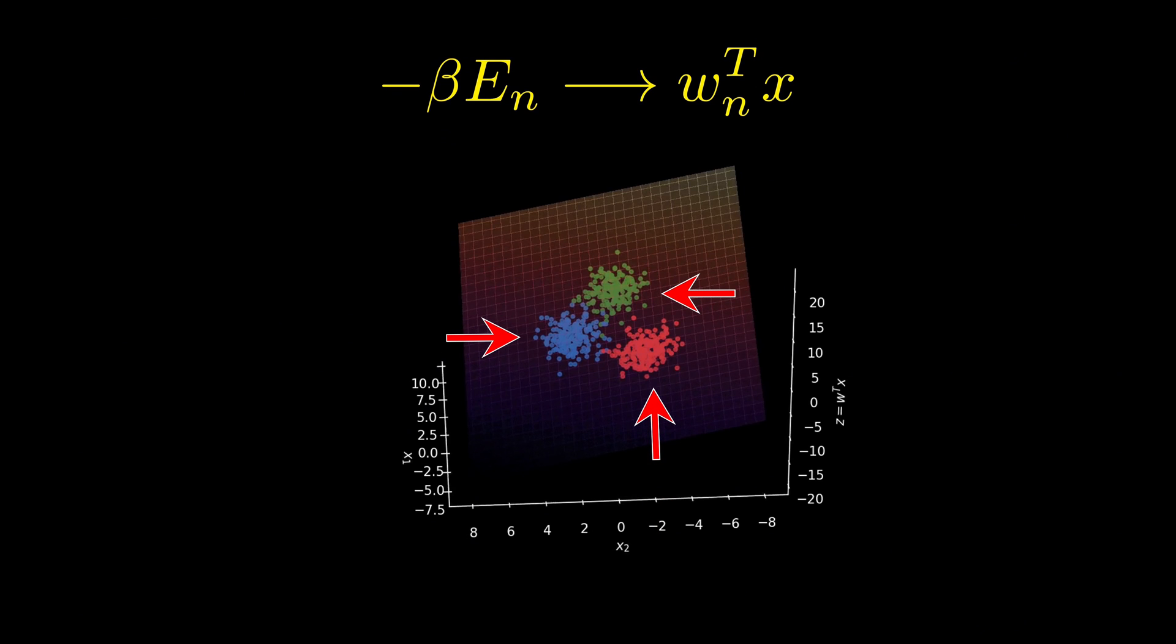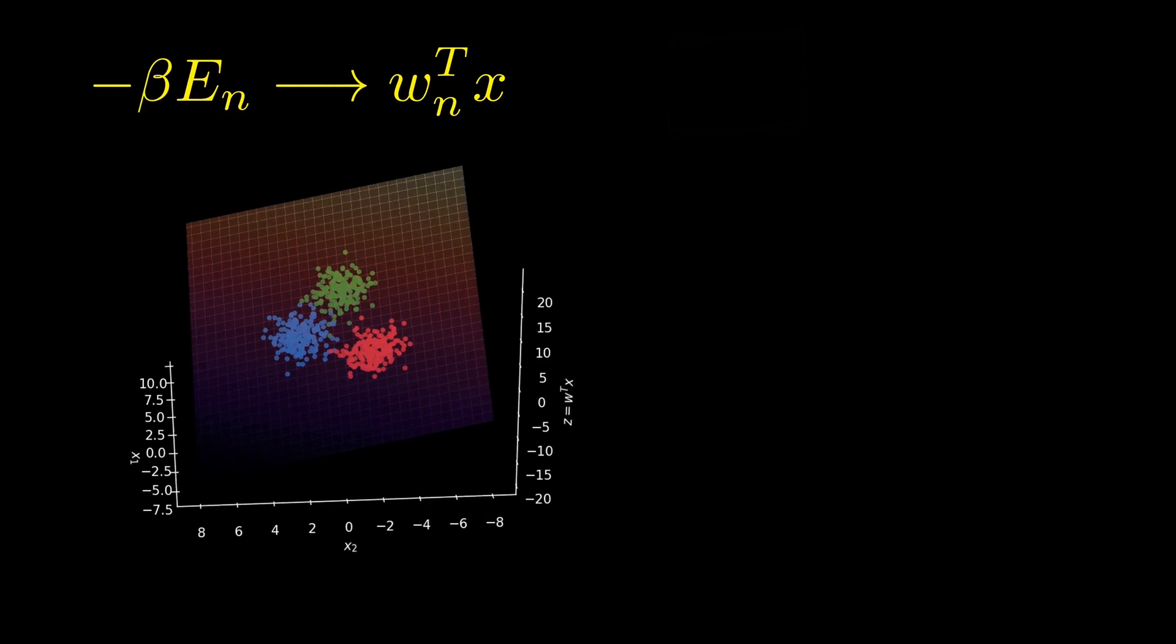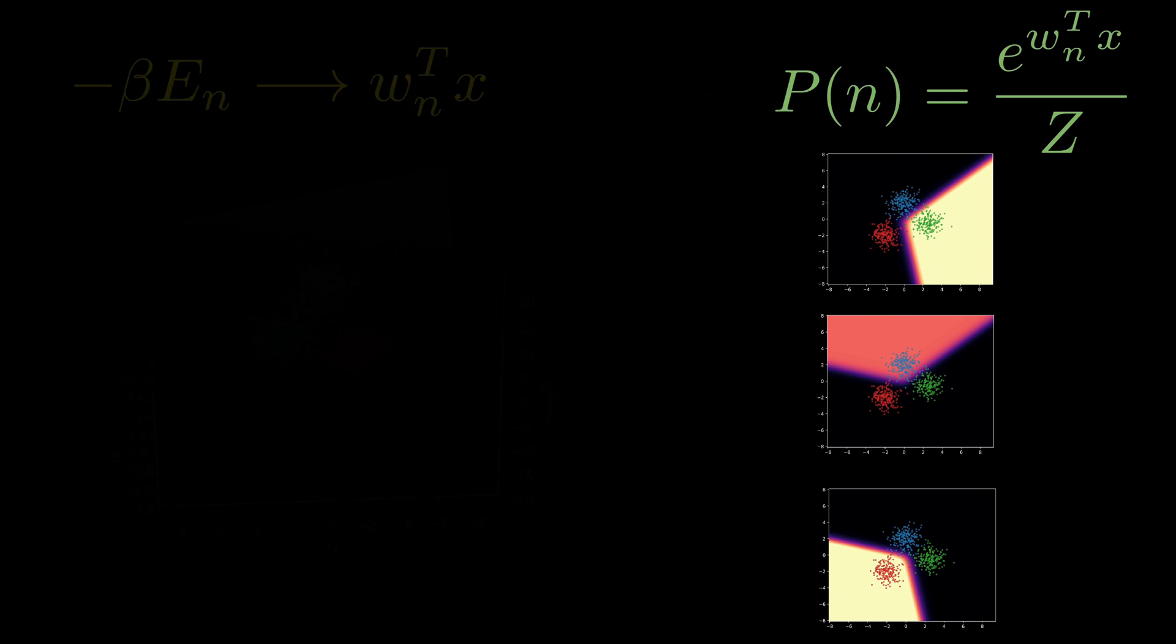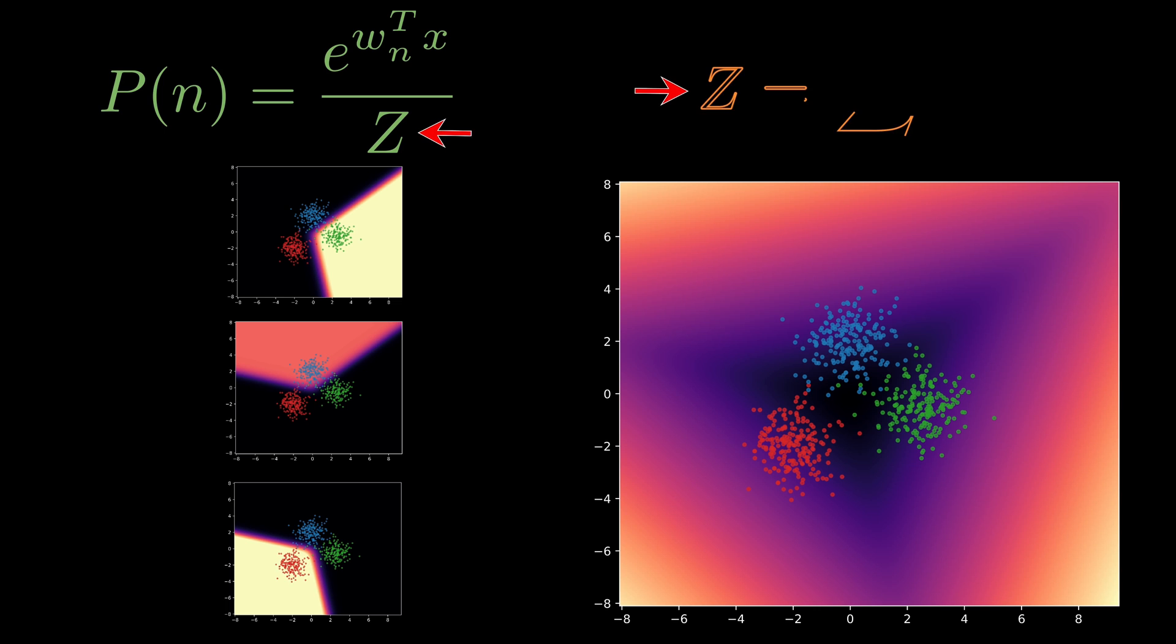So, for each class, we compute the inner product of W and X, plug it into the exponential, and normalize over all classes. After this translation, the quantum probability formula becomes the familiar softmax function of machine learning. Where the partition function Z now plays the role of the softmax denominator.